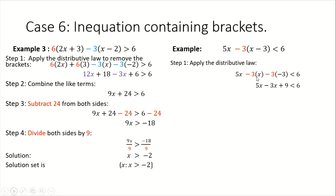We end up with 5x minus 3 times x minus 3 times negative 3 is less than 6. When you simplify: negative 3 times x gives us minus 3x, and negative 3 times negative 3 gives us positive 9. So we get 5x minus 3x plus 9 is less than 6.